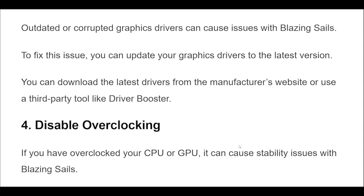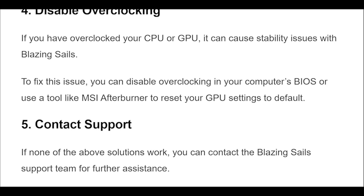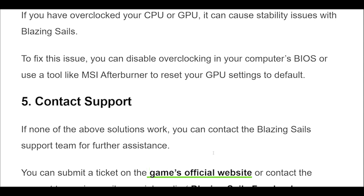4. If you have overclocked your CPU or GPU, it can cause stability issues with Blazing Sales. To fix this issue, you can disable overclocking in your computer's BIOS or use a tool like MSI Afterburner to reset your GPU settings to default.